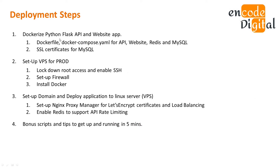First we will look at the Flask API and website I've created — a small one. We'll see how we can dockerize it and use the Docker Compose YAML to bring all the services for the API, website, Redis, and MySQL together. We'll then enable MySQL with SSL certificates so it's deployed securely, and update our Flask app so it can talk to MySQL via SSL certificates rather than just username and password. Then we'll set up the VPS for production, log down root access, enable SSH, set up the firewall, and install Docker.